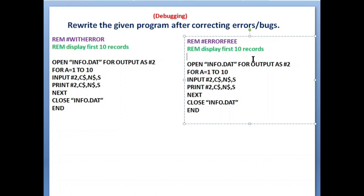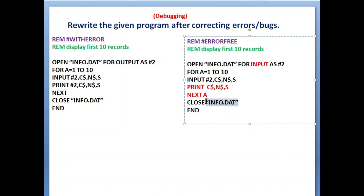Next: 'Display first 10 records.' Display means INPUT mode — that's one error. We use a FOR loop from 1 to 10 to display exactly 10 records. INPUT #1 reads data from the file. While printing, we don't use hashtag numbers, just variable names. The FOR loop must end with NEXT A (the loop variable). CLOSE #2 should be used in place of the file name. Four errors corrected.